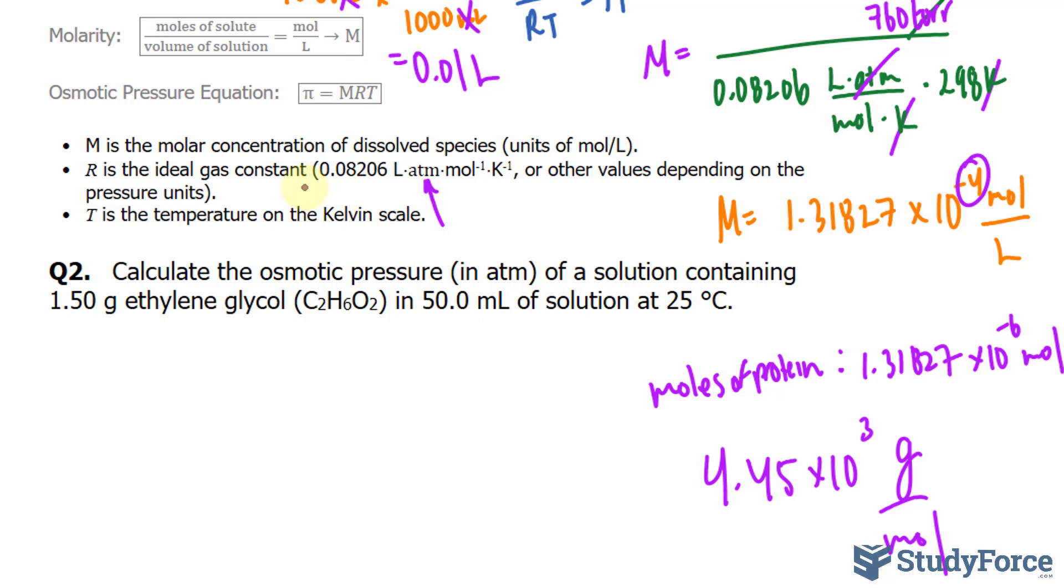Let's see what we have in our particular example. We don't have the molarity, although it can be found. We already know the ideal gas constant, so R is taken care of, and the temperature can be found by taking 25 plus 273.